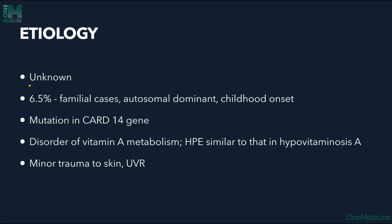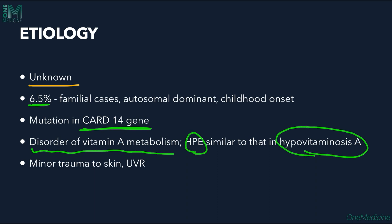The etiology is not known. About 6.5% of cases have been seen in familial cases with autosomal dominant and childhood onset, and mutation in the CARD14 gene has been implicated. It is also considered a disorder of vitamin A metabolism because the histopathology of PRP is similar to that seen in hypovitaminosis A. Minor trauma to the skin and UV radiation can also cause PRP.